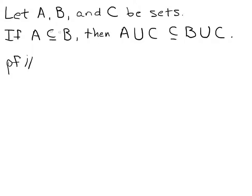We already have it given that set A is a subset of set B. If this is true, then this implies that if we have any element in set A, since A is a subset of B, that element must also belong to set B. So we can say that if X belongs to A, then that implies that X also belongs to B.